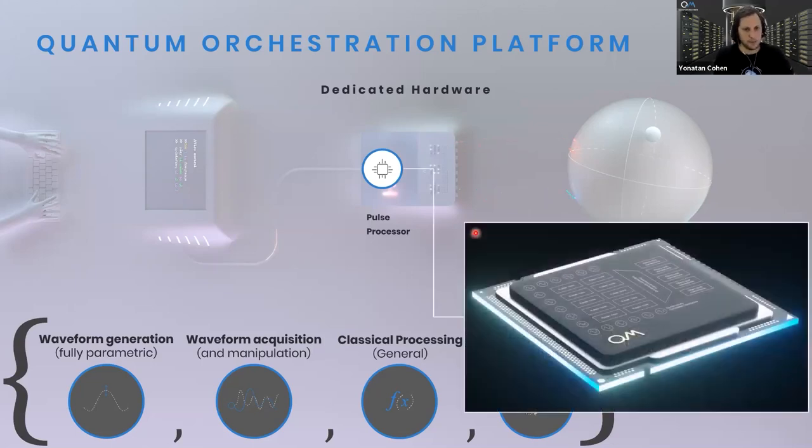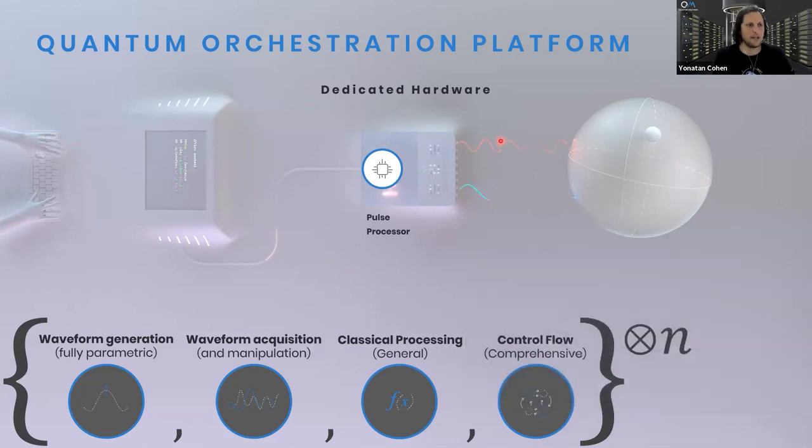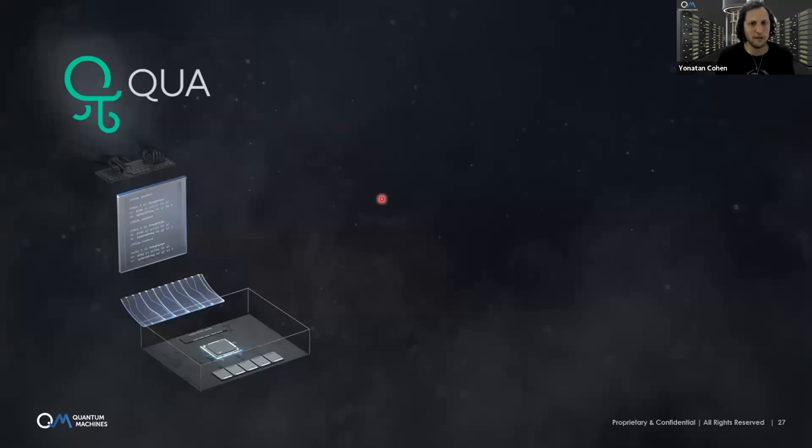This is the pulse processor. On top of that, we developed a very intuitive pulse level control programming language that we call QUA. You write your quantum program in QUA, and then our compiler takes care of all the nitty-gritty optimizations so you get the best performance running on the pulse processor. Today's workshop will show many examples of using QUA and the quantum orchestration platform.